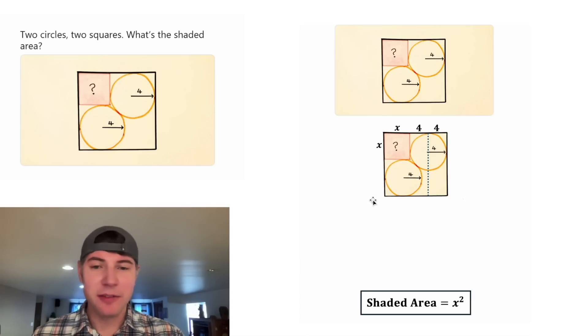And we could do the same thing for the left-hand side. If we draw this line right here, parallel with the base, that'll cut it so that this will be equal to the radius of four, and this will be equal to the radius of four. So once again, the side of the square is X plus four plus four.